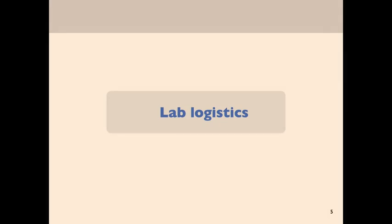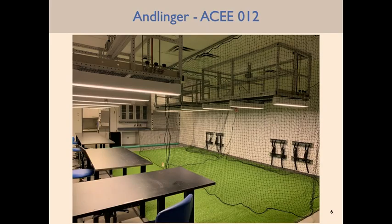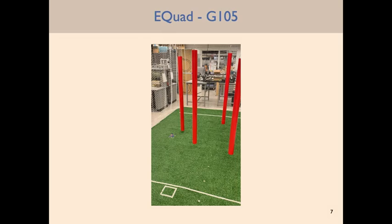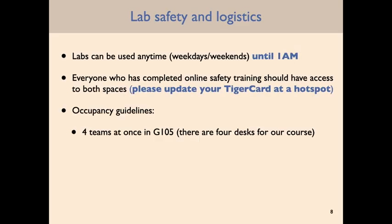These are just the kinds of things one can do with LQR — it's a pretty powerful and really popular technique for feedback control. Regarding lab logistics: this is the space in the Amlinger building where we're going to have office hours. Don't show up to the eQuad for office hours — show up here. We also have G105 in the eQuad; for the lab you're welcome to use either space. G105 is slightly smaller but the lighting is a bit better.